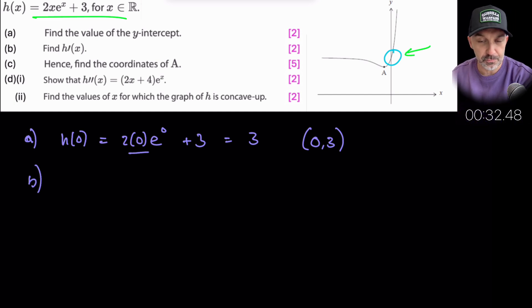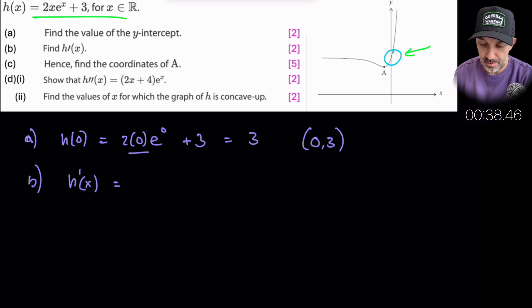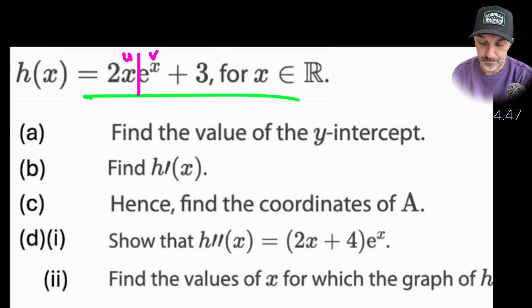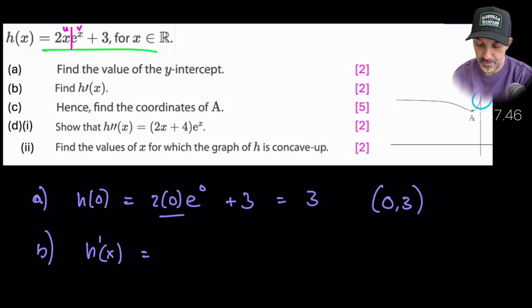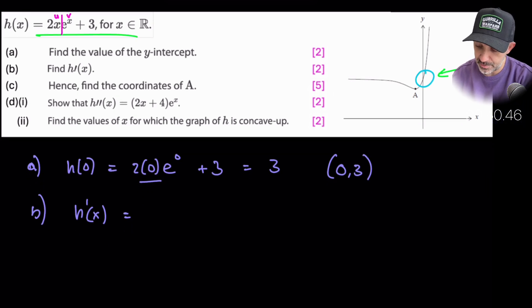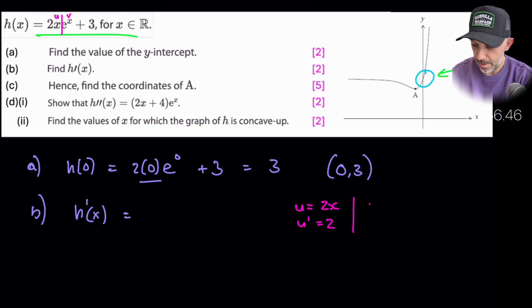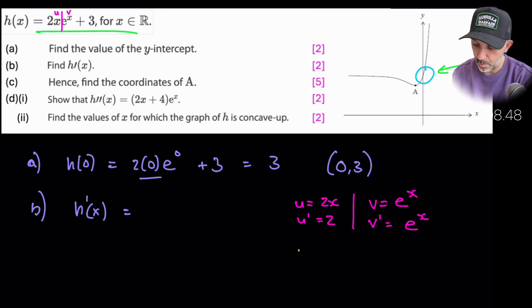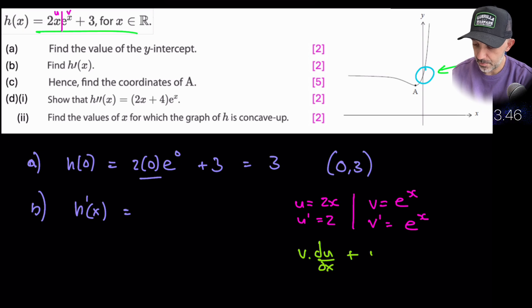Okay, part B of the question: find the derivative of this function, h'(x). Going back up to the function, we can call the first part u and the second part v, with the +3 which disappears when we differentiate a constant. So: u = 2x, u' = 2, v = eˣ, and the derivative of eˣ is just eˣ.